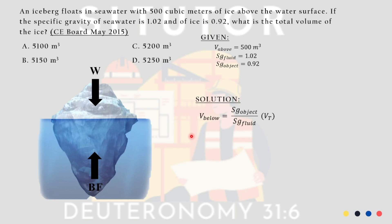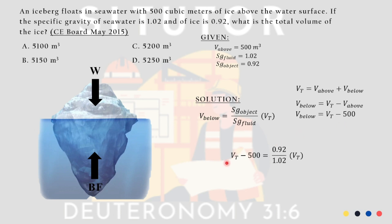For the solution, this is a general equation you can memorize — it can be used in many problems. Volume below equals specific gravity of the object over specific gravity of the fluid, times the total volume. We know total volume equals volume above plus volume below. Isolating volume below and substituting 500 for volume above: total volume minus 500 equals (0.92 / 1.02) times total volume. Solving, total volume is equivalent to 5,100 cubic meters. That is letter A.